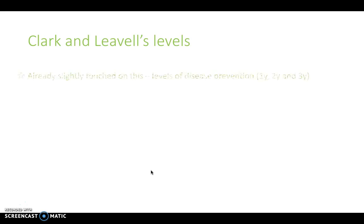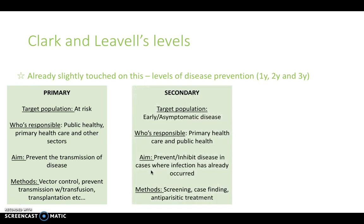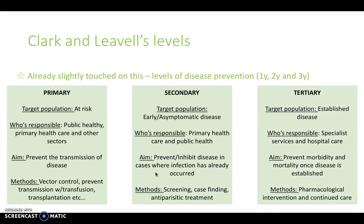This brings us to Clark and Leville's levels, which builds on primary, secondary, and tertiary disease prevention. Primary prevention targets those who are at risk but haven't yet developed anything, and prevents the transmission of disease. Secondary prevention targets those who have just been diagnosed with early or asymptomatic disease, aiming to prevent disease progression — screening is an example of this. Tertiary prevention targets people with already established disease, aiming to prevent morbidity and mortality.